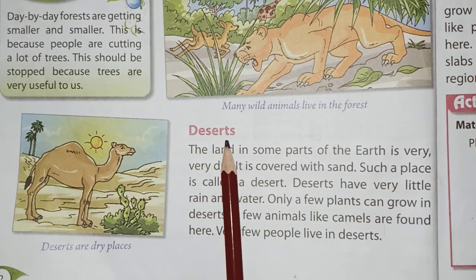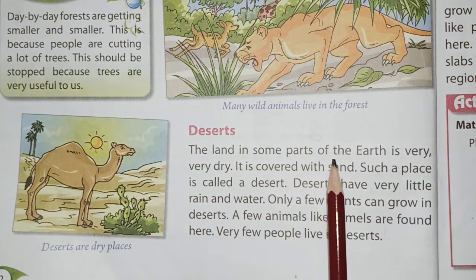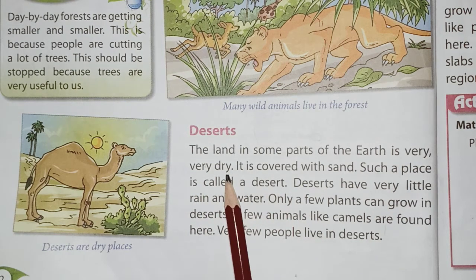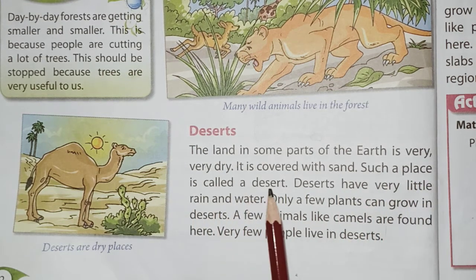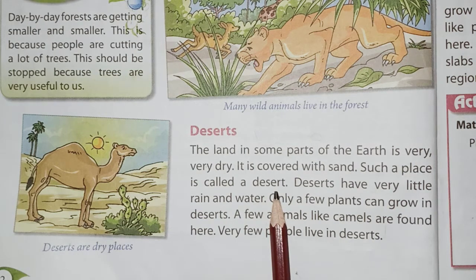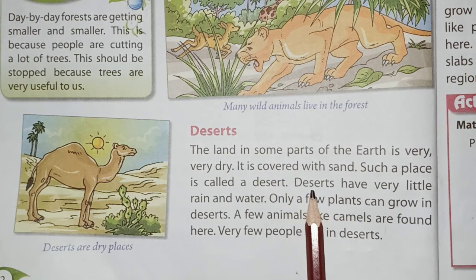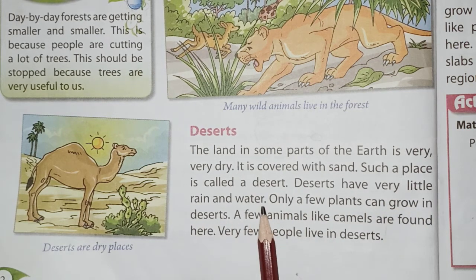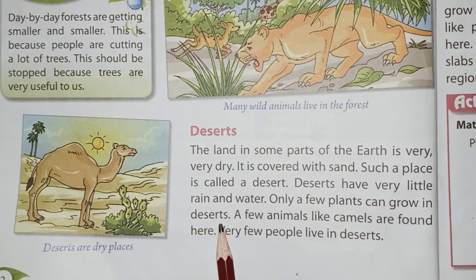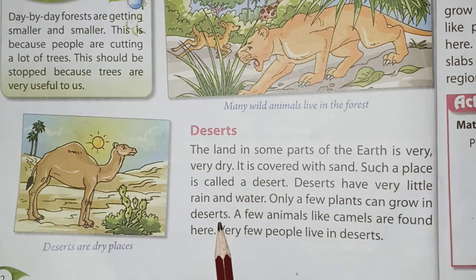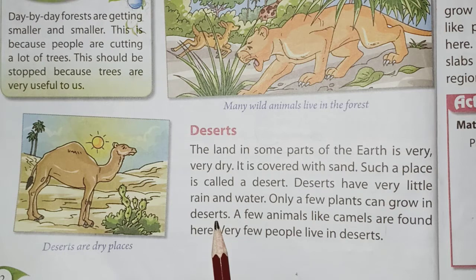Next is the desert. The land in some parts of the Earth is very dry and covered with sand. Such a place is called a desert. Deserts have very little rain and water, so only a few plants can grow there. The land which is covered with sand is known as desert.